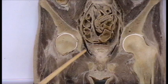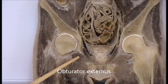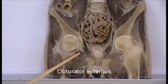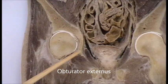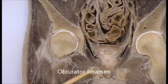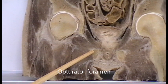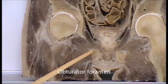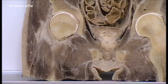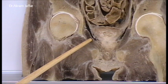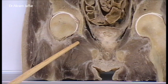This muscle, together with the obturator externus which is present on the external aspect, closes the obturator foramen. This is the site of the obturator foramen. It is closed by the obturator membrane, which is not very clear here. On the inside of the obturator membrane is the obturator internus, while on the outside it is the obturator externus muscle.